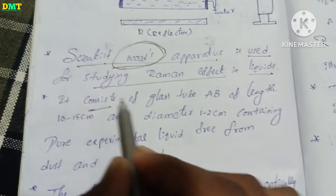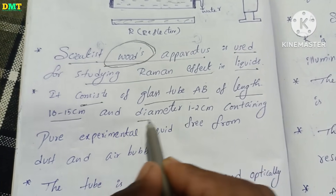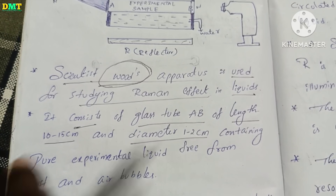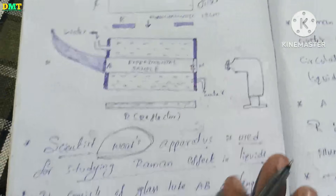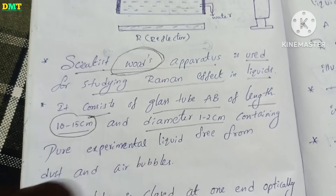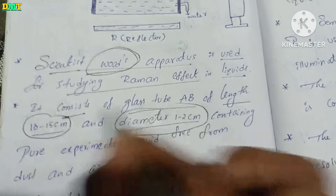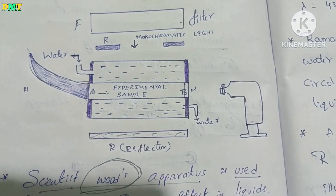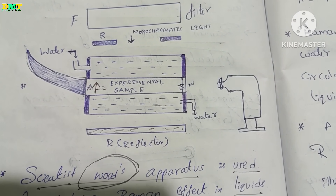It consists of a glass tube AB of length 10 to 15 cm and diameter 1 to 2 cm.